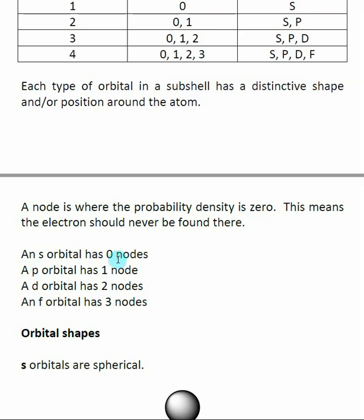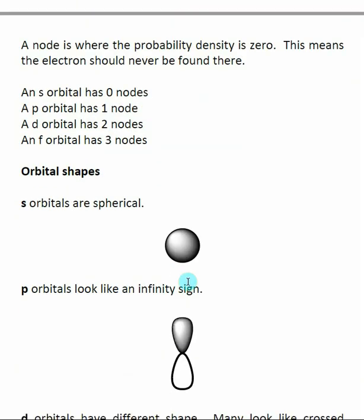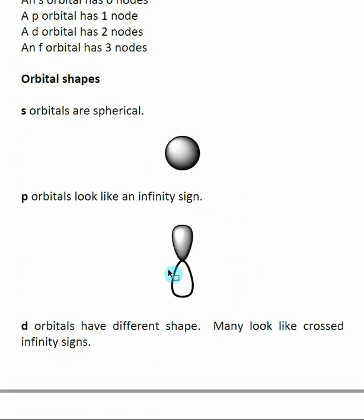An s orbital has zero nodes, a p orbital has one, a d orbital has two, and an f orbital has three. An s orbital is actually spherical, with the atom at the center. This is similar to how people think of something orbiting something else, like the moon going around the earth in a spherical path — the electron lives inside this spherical probability shape around the nucleus.